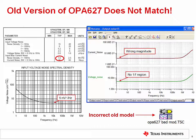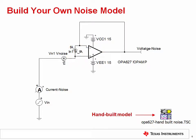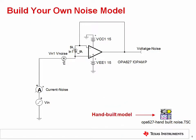Texas Instruments provides a TINA-SPICE model that you can customize in order to achieve accurate noise performance. The model includes a noise voltage source, a noise current source, and a generic op amp. The 1/f and broadband noise in the models can be adjusted according to the datasheet specifications for the op amp you want to model. Also, the op amp's open loop gain and bandwidth can be adjusted so that the AC response is correct. Included in this presentation is an embedded link to a TINA-SPICE circuit with the noise sources and generic op amp. Now let's see how to edit the sources and op amp to match the datasheet.